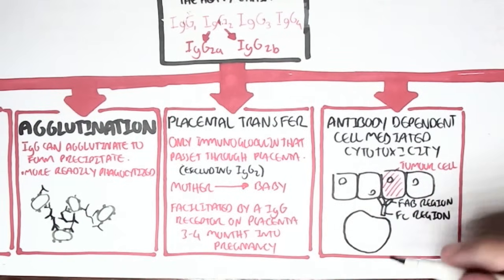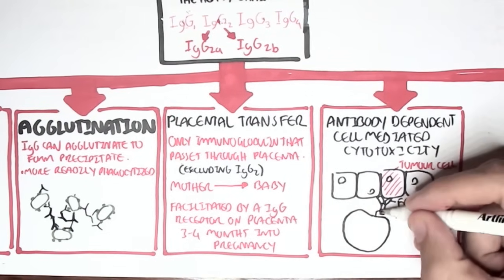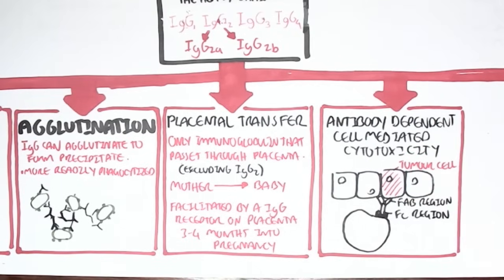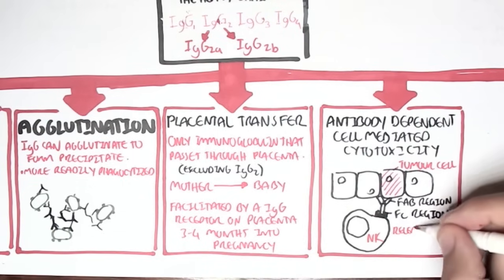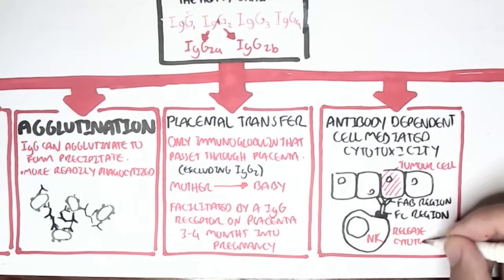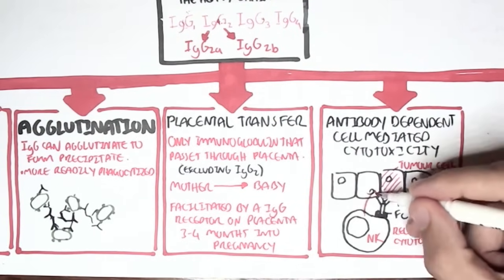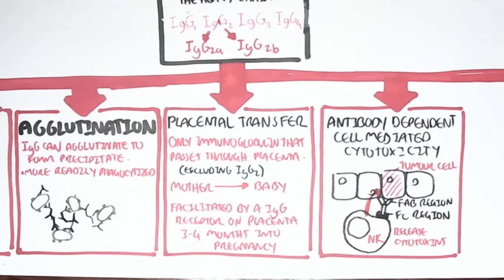The FAB region can bind onto specific things that are expressed by this tumor cell. And then it will obviously have the FC region sticking out. This will allow cells called natural killer cells to bind onto the FC region of the antibody and to realize that this is a tumor cell there. And so it will release cytotoxins to kill it.